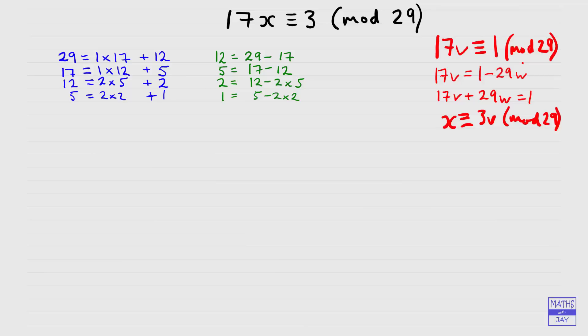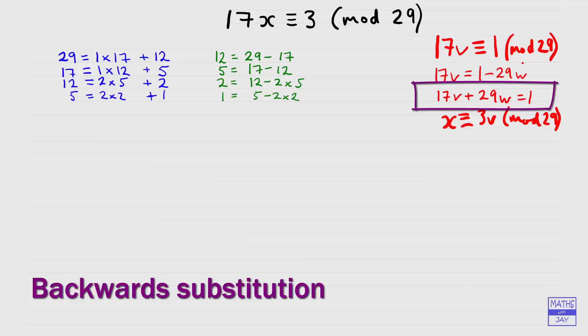So now we're ready to do our backwards substitution. Remember what we're aiming to do is to write 1 is equal to 17 times something plus or minus 29 times something. So we're starting with our last line. So 1 is 5 minus 2 times 2. And we're going to replace the final 2 by the remainder 2 in the previous line. So no need to write the times there, we can just open a bracket and we're replacing 2 by 12 minus 2 times 5.